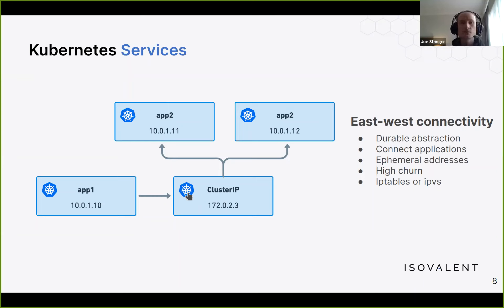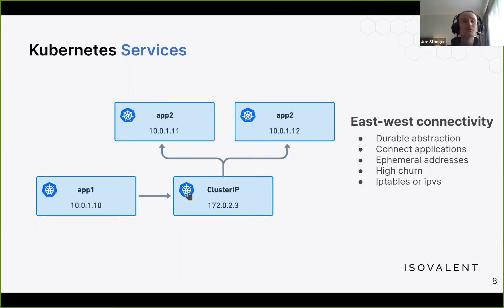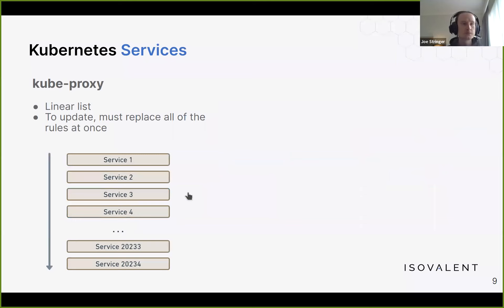Today Kubernetes implements this using kernel technology such as iptables or IPVS, and this has an impact on the performance of the solution. How we choose to implement the networking layer for service translation is quite important.